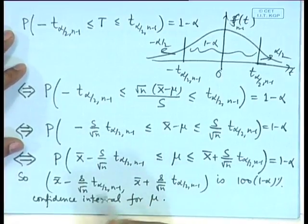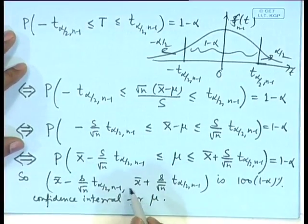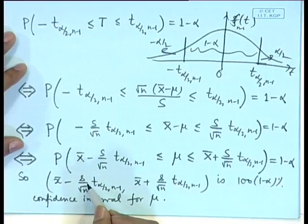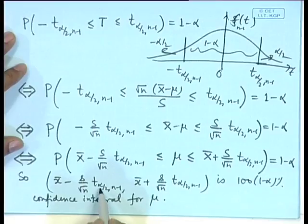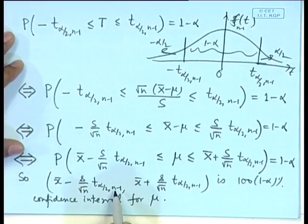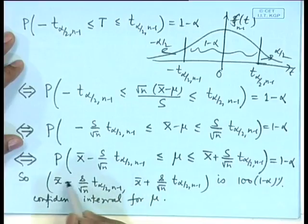To obtain the confidence interval in a practical situation: observe the sample, calculate the mean and sample variance. Then look at the confidence level desired — suppose alpha = 0.1, we look at t at 0.05. If there are 10 observations, we look at t_0.05,9 from the tables of the t distribution and evaluate the value. That gives a 90 percent confidence interval for the parameter mu.